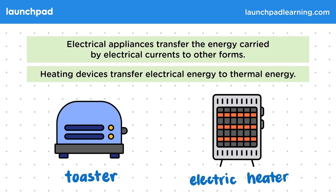For your exam you don't need to know these exact examples, but you should be able to describe the energy transfers that take place in simple electrical appliances, in particular those with motors or heating devices. So how exactly do we manage to generate heat from electric currents?